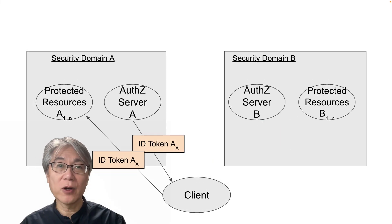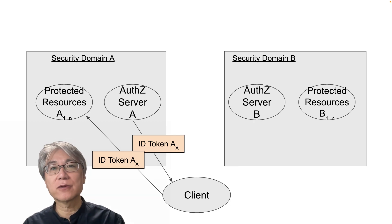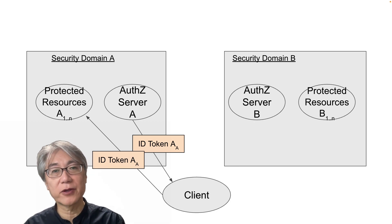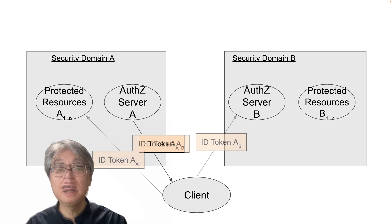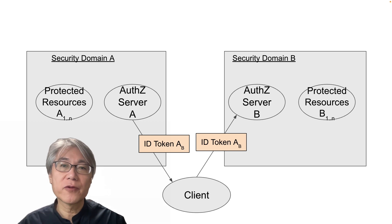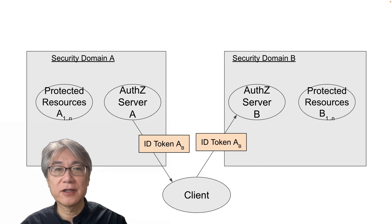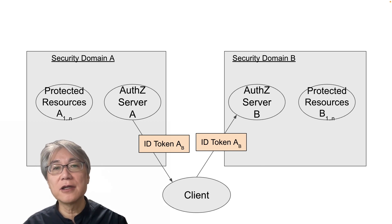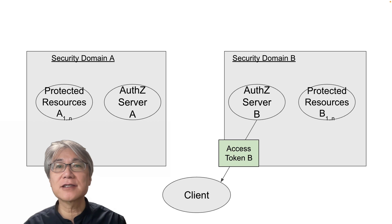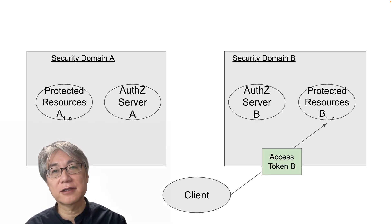The situation is quite different in the case of ID token. Authorization server A can mint an ID token addressed to the resources within domain A, obviously. But it can also mint one towards security domain B. When authorization server B receives the ID token with its audience set to itself, it can evaluate the claims within the ID token and decide to issue an access token to be used by the client to access protected resources in B.